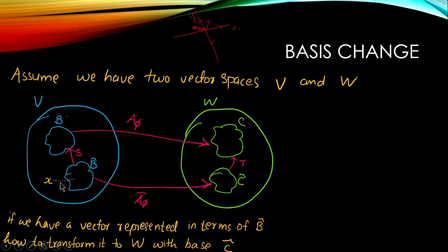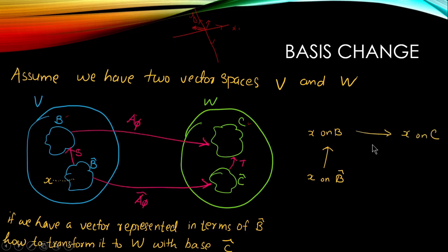So how do we convert x from B̂ basis to Ĉ basis? First, we take vector x in B̂ and convert it to the standard basis B. From B we can convert it to C by applying φ, giving a vector in C basis. Then we convert from C into Ĉ basis. That is the transformation path we will follow.